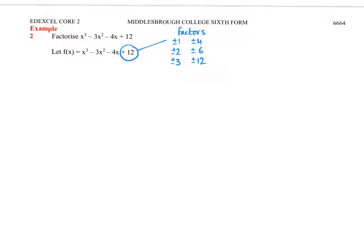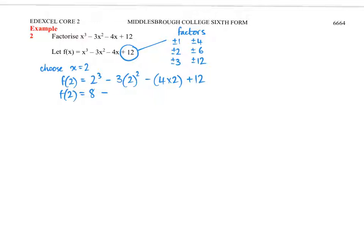So we've got quite a lot - six options there. And if we don't choose wisely, we're going to end up doing an awful lot of arithmetic. Shall I give you a clue? I think 2 might be a good bet. But that would be up to you to look at the numbers and think - 1 and 2 are usually the ones to start off with. So I'm going to choose x equals 2, so let's do f of 2. It's equal to 2 cubed, minus 3 times 2 squared, minus 4 times 2, and then plus 12. So f of 2 is going to be 8 minus 12 minus 8 plus 12, which equals 0. Good choice - because that tells me that x minus 2 is a factor, using the factor theorem.